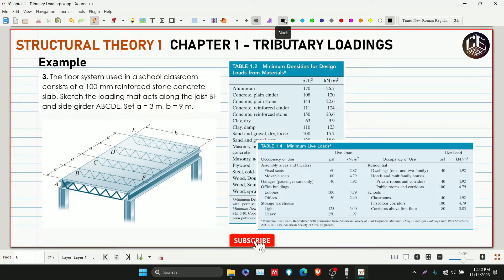The floor system used in a school classroom consists of a 100 millimeter reinforced stone concrete slab. Sketch the loadings that act along the joist BF and side girder ABCDE. Set a is equivalent to 3 meters and b is equivalent to 9 meters.